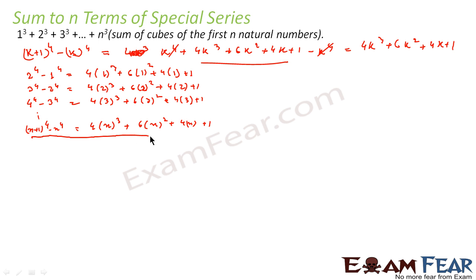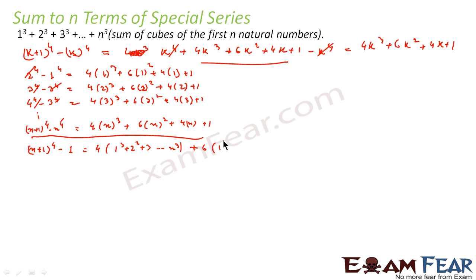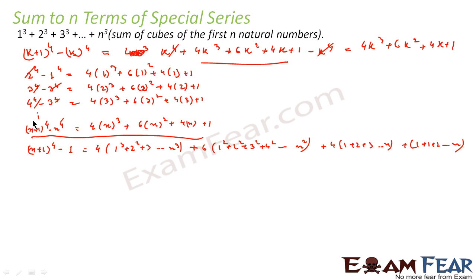If you add all these equations, on the left hand side the terms cancel — 2⁴ cancels, 3⁴ cancels, 4⁴ cancels, and so on — so what you get on the LHS is n plus 1 to the power 4 minus 1. The right hand side we get the sum of these terms.